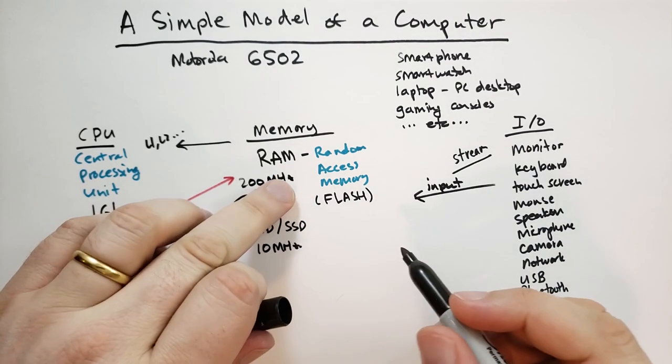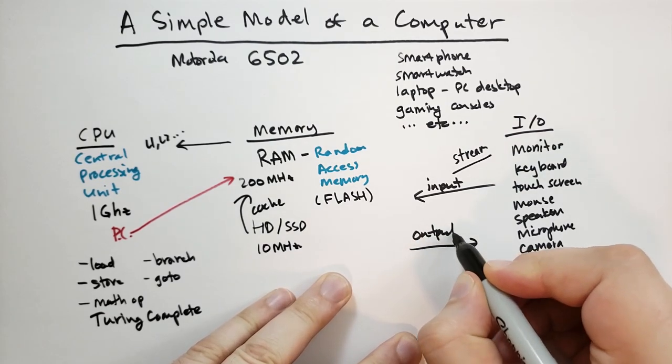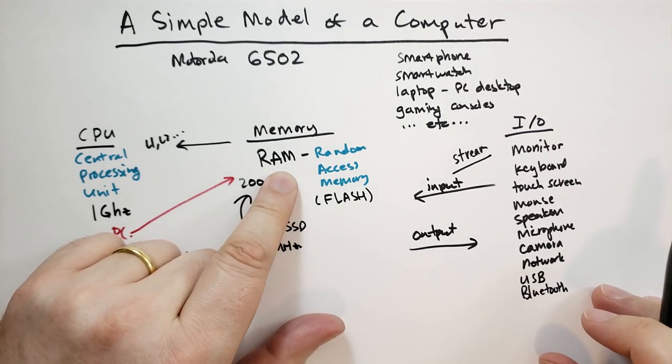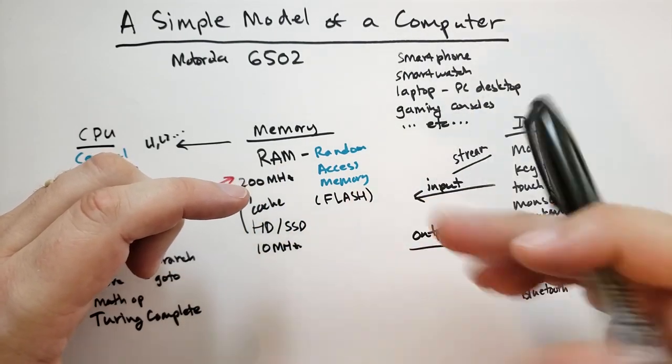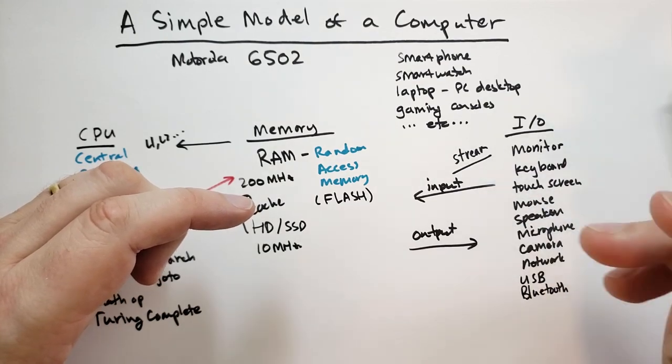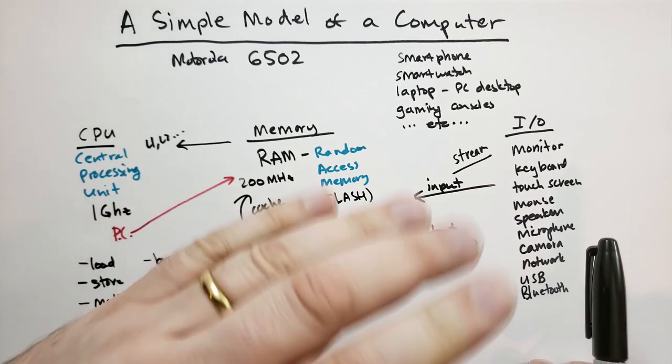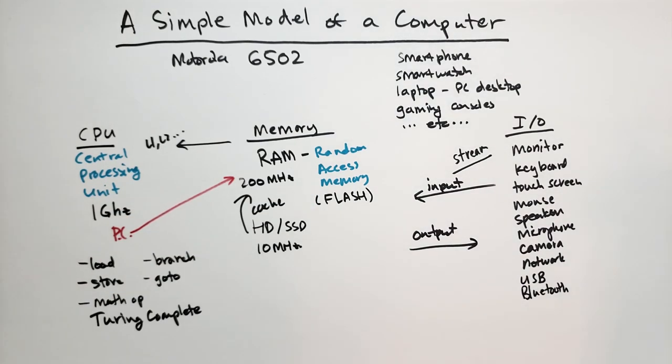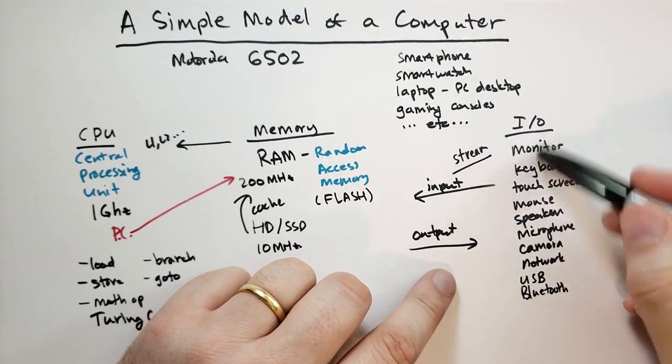And then if you have something you want to show the rest of the world, that's the output. And so like on your graphics card, you have a section of the memory that's reserved for the actual images to be shown. And there's a device or some series of chips that will actually translate that section of memory to a signal that can go out to the monitor and show up on the screen. So you have this input stream, you have output streams,